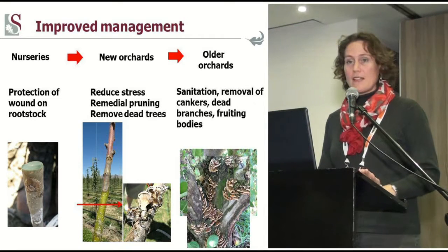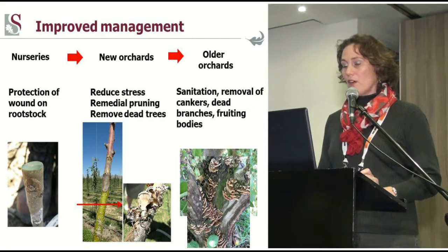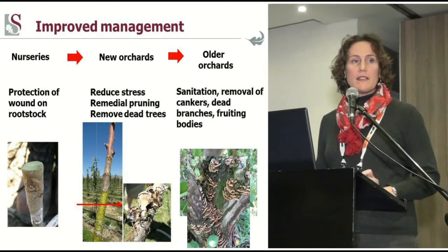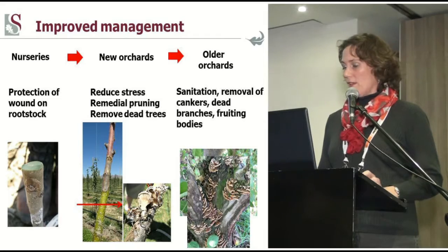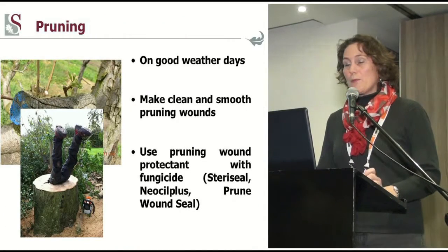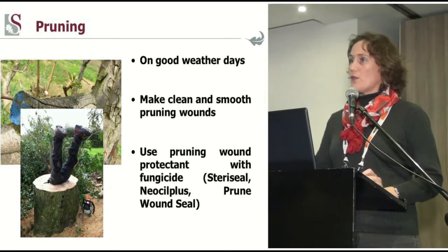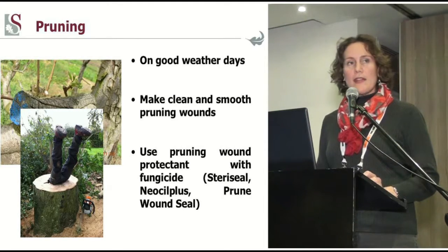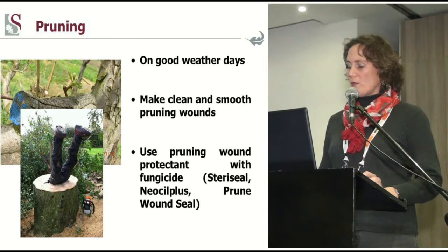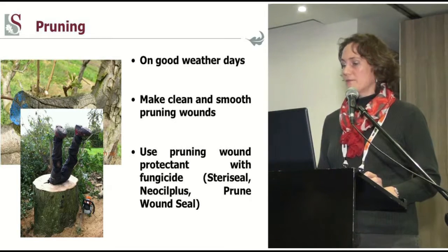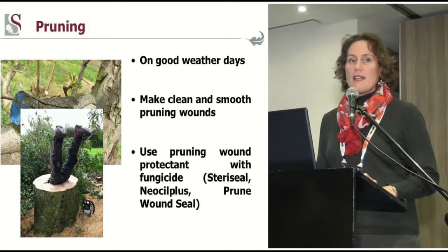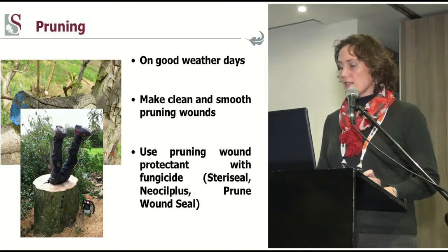In older orchards, sanitation is really critical — removal of cankers, dead branches, and fruit bodies. The main trunk of some older trees is really rotten with Trametes vesicularis and lots of fruiting bodies continually producing spores. Pruning is a very important practice, and because pruning wounds are critical entry points for these pathogens, you need to take care. Prune on good weather days, not during wet days, because these pathogens produce sporulation structures especially when it's wet and spores spread via splash dispersal. Make clean and smooth pruning wounds to allow natural wound healing to take place as fast as possible, and use pruning wound protectants that also contain a fungicide.